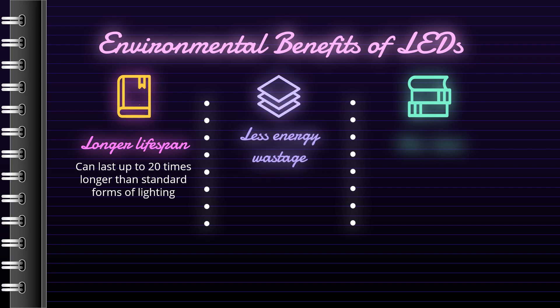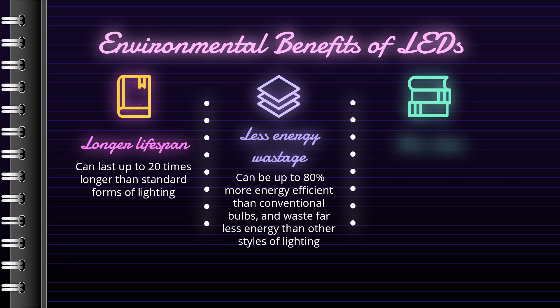Standard LED bulbs can be up to 80% more energy efficient than conventional bulbs and waste far less energy than other styles of lighting. Fluorescent lights, for example, convert around 95% of the energy they produce into heat and only 5% into light. LED lights, however, convert 95% of their energy into light with only 5% being wasted as heat. This means that LED require less power than regular forms of lighting, so the less energy they require, the more positive the effect on the environment. As a homeowner or business owner, the less energy required to produce lighting, the lower your monthly energy bills will be.